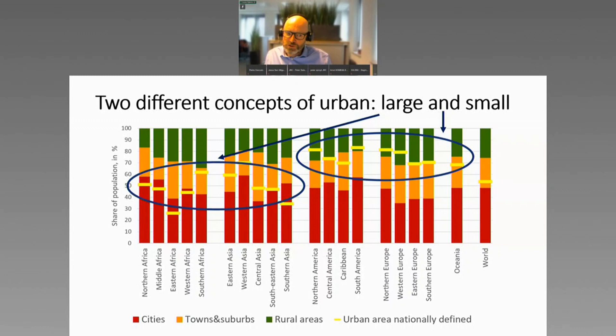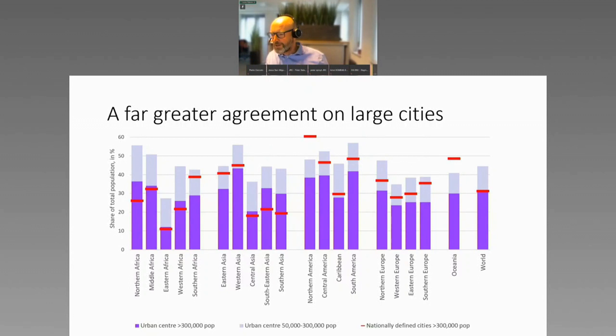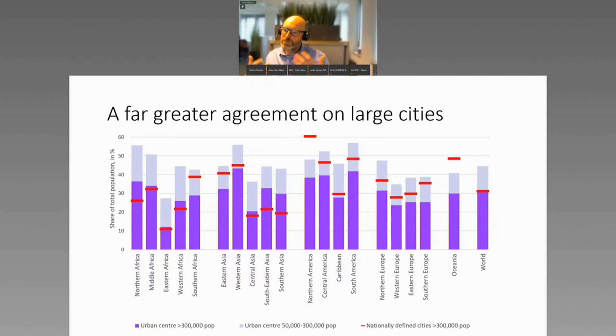There's one area where there was less confusion: we tend to agree on where large cities are. Large cities are fairly easy to identify — you can also easily see them from space. In the red bars you see nationally defined cities over 300,000 as a share of total population, and in dark purple you see what our cities over 300,000 look like. In most cases we agree very much. Only in North America are cities defined as agglomerations including their suburbs, so they get much higher population shares. Overall, we clearly agree on what a large city is, but we don't agree on what 'urban' is.